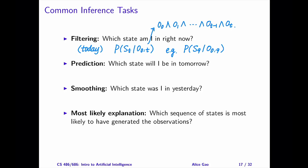As an example, we may want to estimate the probability of being in a state on day 9 given the observations from day 0 to 9.